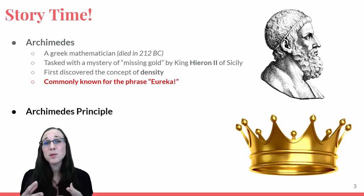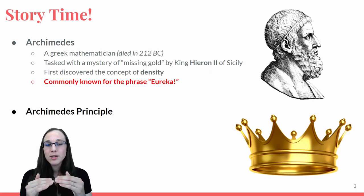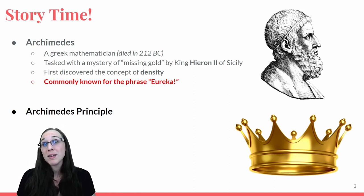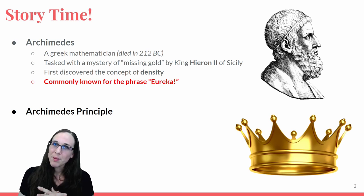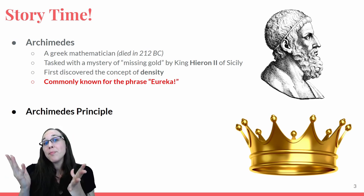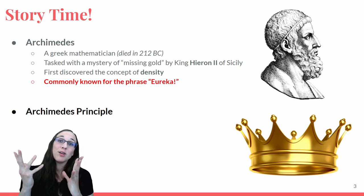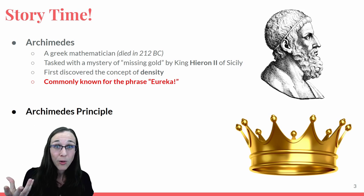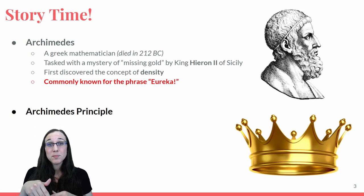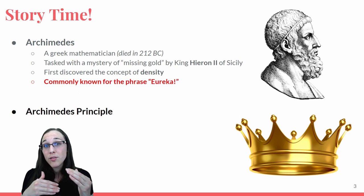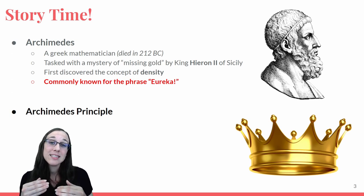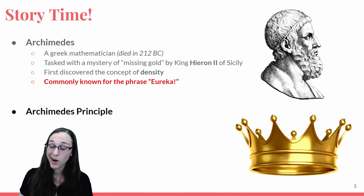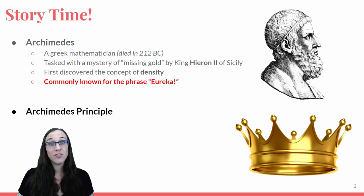The principle of using water displacement — how much the water rises when you put something in it — to measure an object's density is the Archimedes principle. Archimedes purportedly jumped out of the tub and ran through the streets naked screaming 'Eureka!' He realized he could put the crown in a water bath, measure how much it displaced the water, determine the density of gold, and see whether the goldsmith had cheated the king.